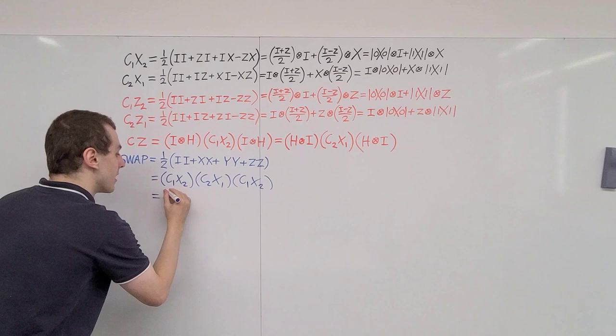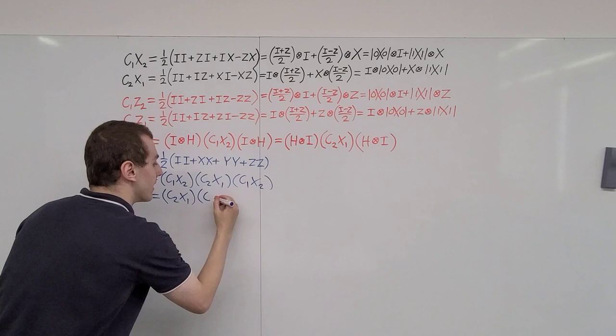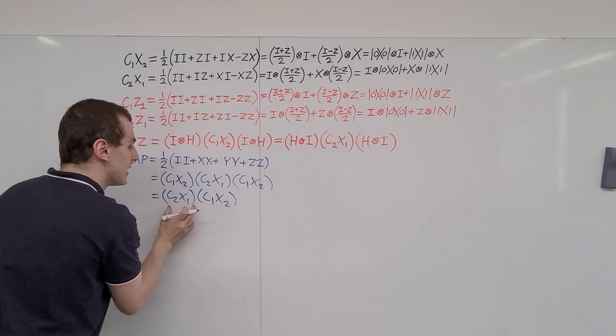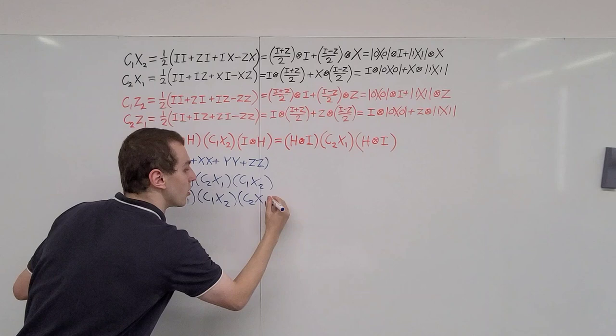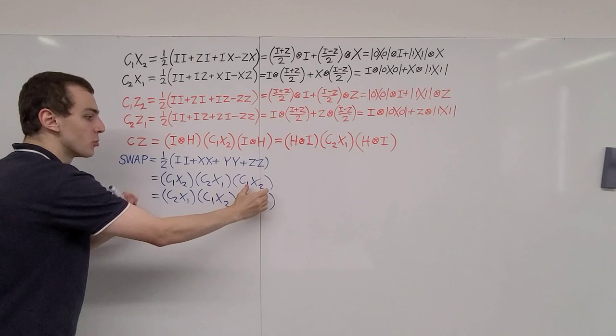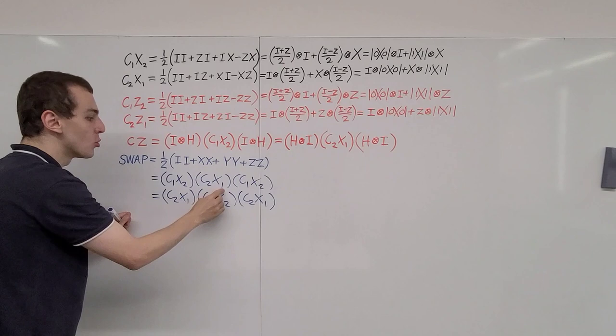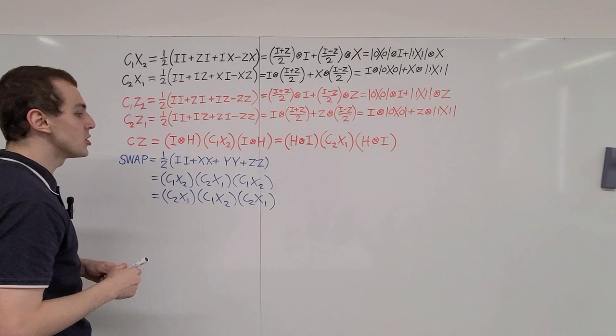Alternatively, we can also write it as C2X1 · C1X2 · C2X1. All I've done here is swap the roles: the bread of the sandwich changes from C1X2 to C2X1, and the filling in the middle changes from C2X1 to C1X2. So as long as the two outer CNOT gates are the same and the middle one is flipped, you get the swap gate.